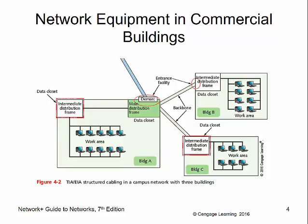There are some terms we need to look at that the standard defines. If this is a map of our facility with a couple of buildings, we have something called the demarcation zone, or the entrance facility. This is where your network connectivity comes in from the outside world — the internet. At the line of demarcation is where it enters your area and becomes your responsibility — your local area network.